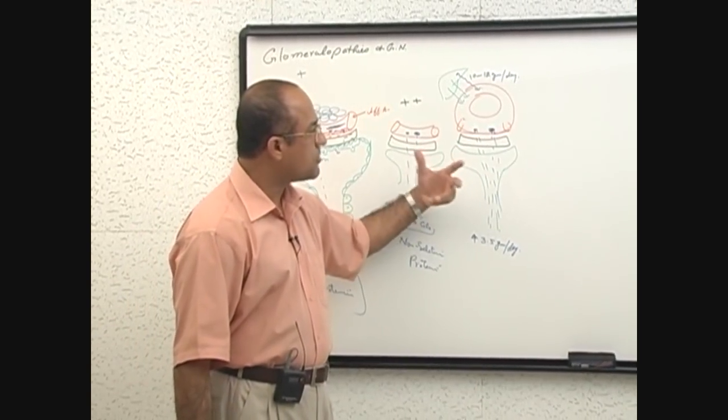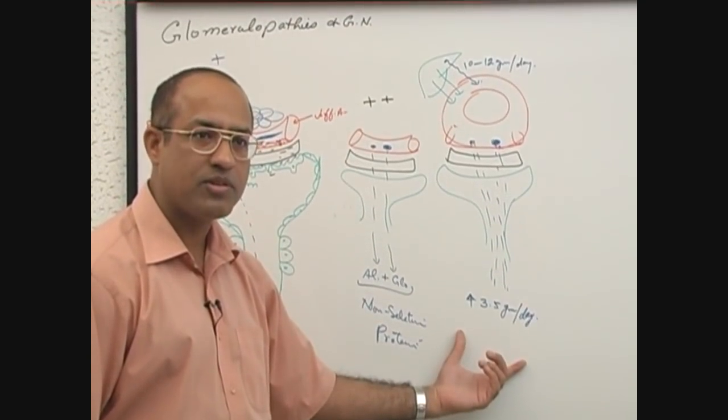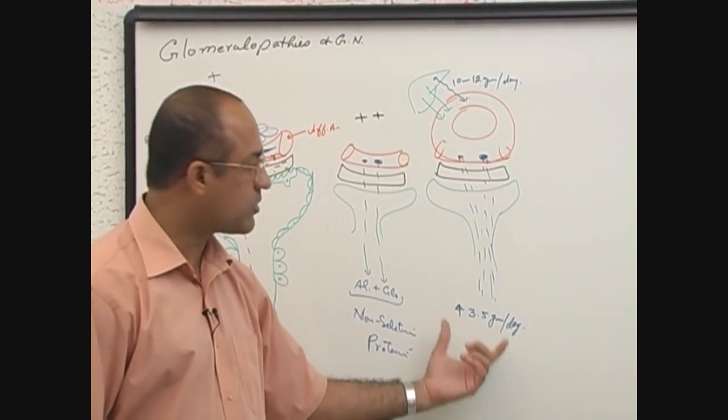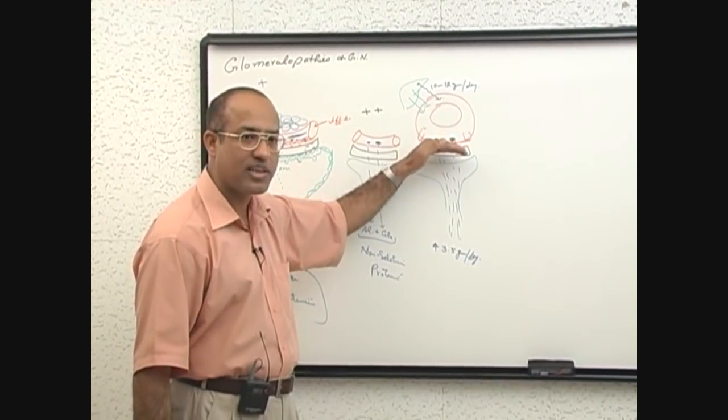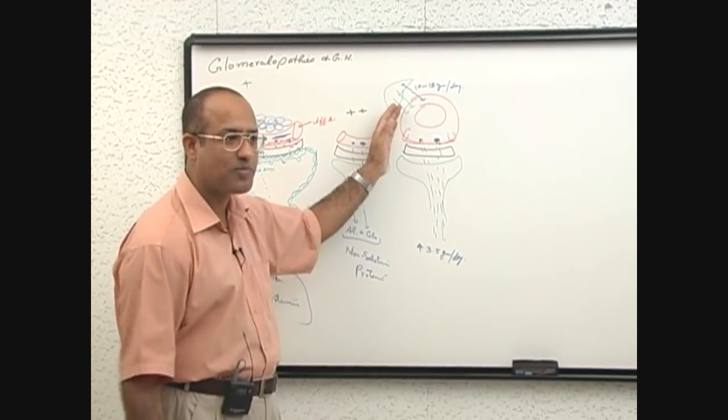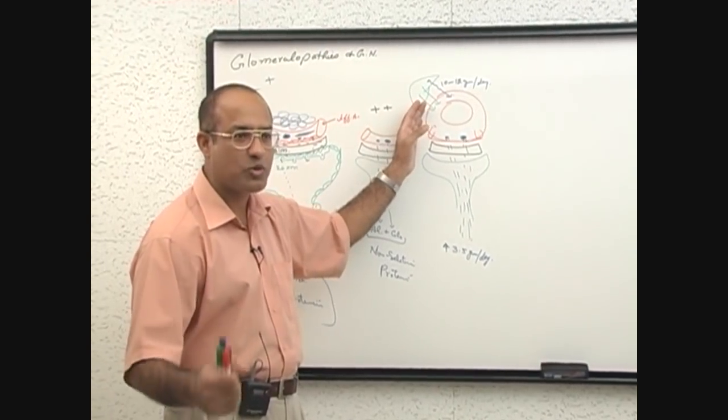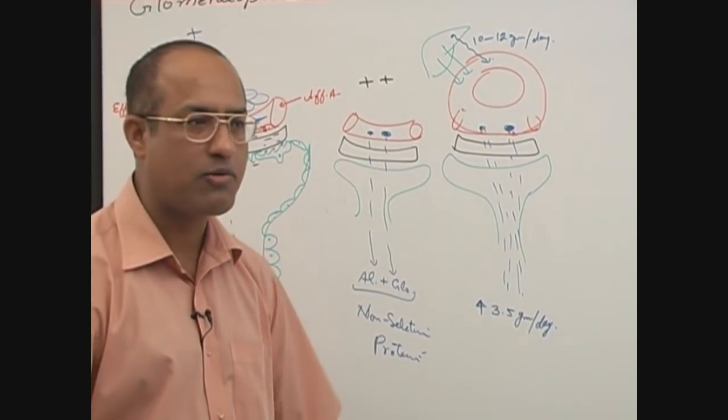The mystery is that someone who starts losing more than 3.5 grams of protein per day into urine, plasma protein levels start going down in spite of compensatory synthesis of 10 to 12 grams per day by the liver. If someone can answer fine, otherwise I am left with the answer.